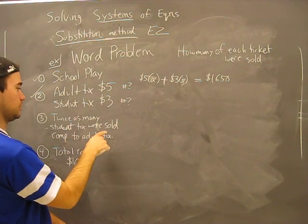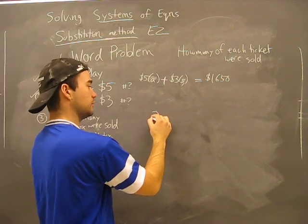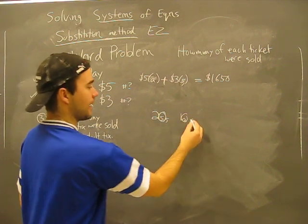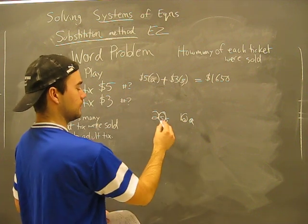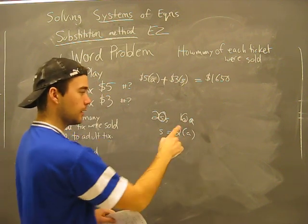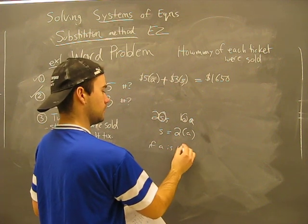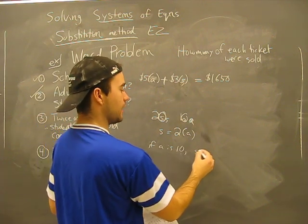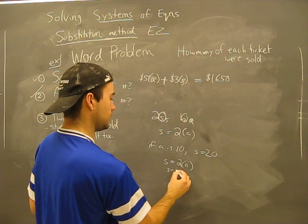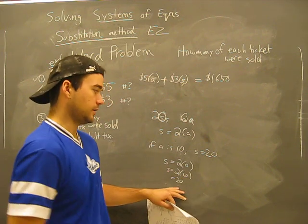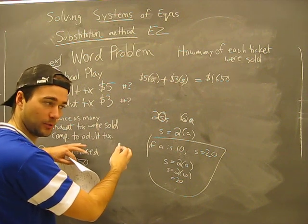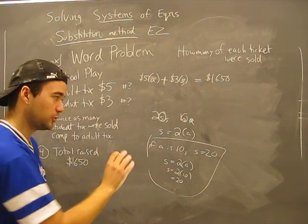Twice as many student tickets were sold compared to adult tickets. So if I sell two student tickets, I get one adult ticket sold. If I sold 20 student tickets, I get 10 adult tickets sold. What that's telling me is that the S value is two times the A value. You follow? If A is 10, then if we sell 10 adult tickets, then we should have 20 student tickets. So how would this look mathematically? S would have to be two times A. Or S would be two times 10, equal 20. This is probably the hardest part to get straight.